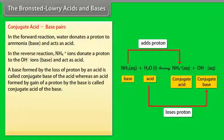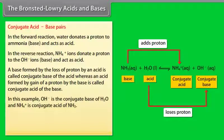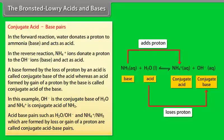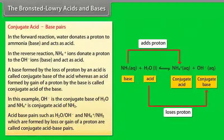An acid formed by the gain of a proton by a base is called the conjugate acid of the base. In this example, OH⁻ is the conjugate base of H₂O and NH₄⁺ is the conjugate acid of NH₃. Acid-base pairs such as H₂O/OH⁻ and NH₄⁺/NH₃, formed by loss or gain of a proton, are called conjugate acid-base pairs.